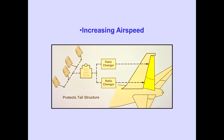As airspeed increases, the ratio changers gradually reduce rudder surface response to pedal inputs. This protects the vertical tail structure from excessive stresses.